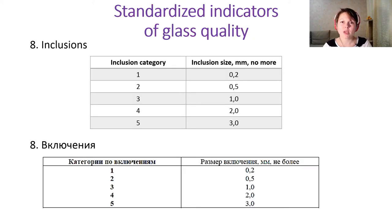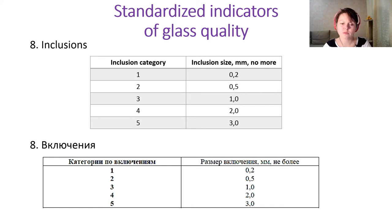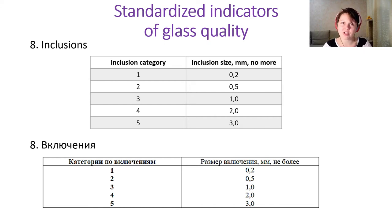The last standardized indicator is inclusions — the absence or presence of them. Inclusions means other glass defects not counting striae and bubbles. We will talk about glass defects a little bit later.